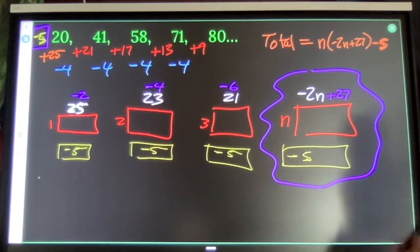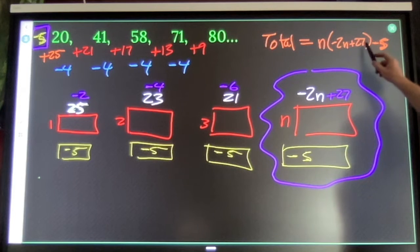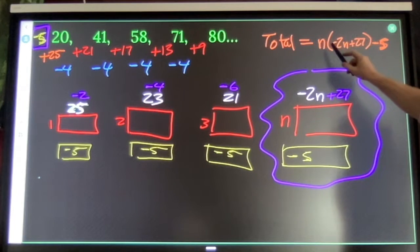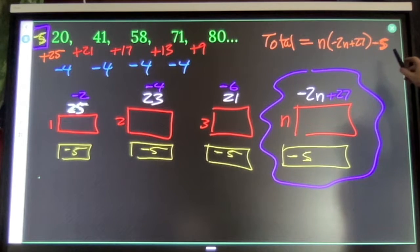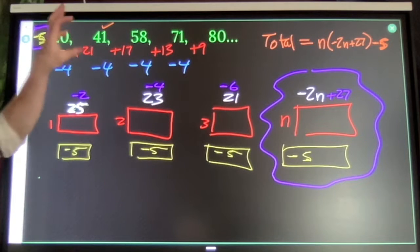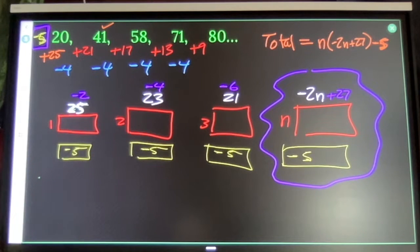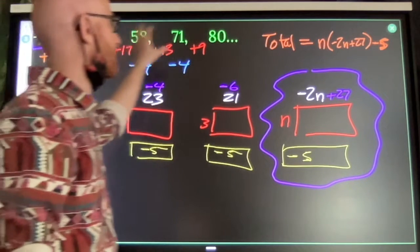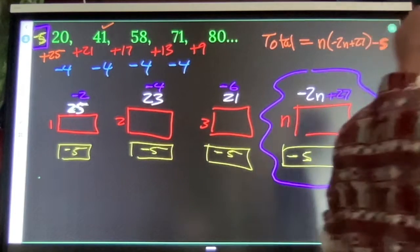The second term. Negative 4 plus 27 is 23. 23 times 2 is 46. 46 minus 5 is 41. So I know that the formula works. And then I can use the formula to find any number in the sequence.